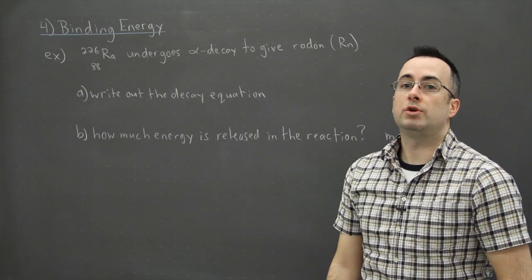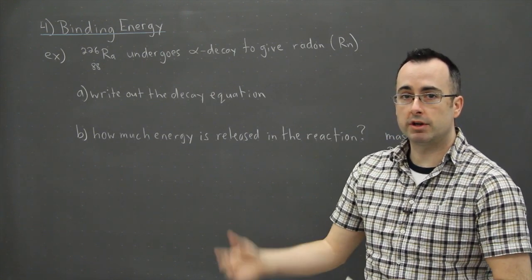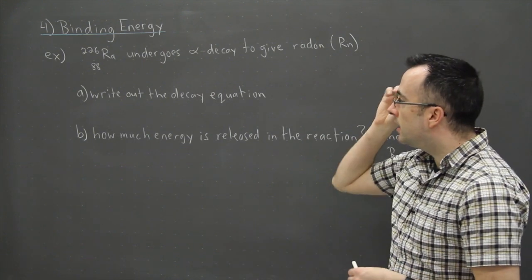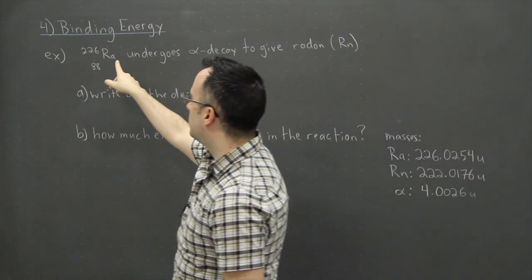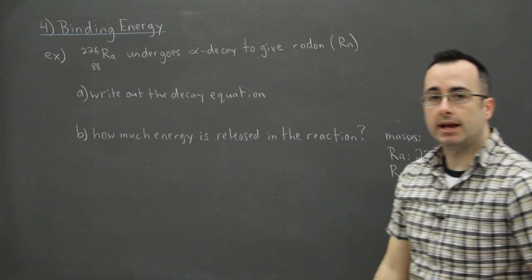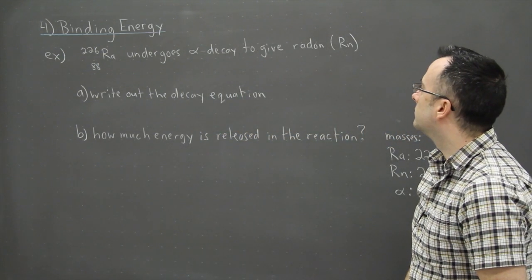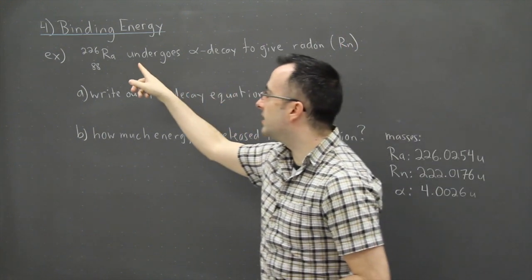I thought it might be a good idea to show you an example of how we use binding energy in something similar to what you might see on an exam. So this example here, we have radium-226 undergoes alpha decay to give radon, which is given by Rn. Radon is Rn, radium is Ra.